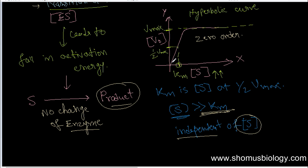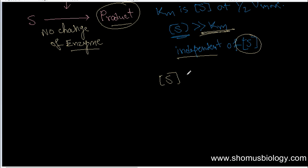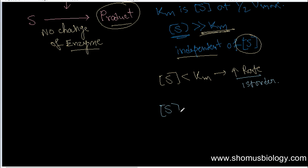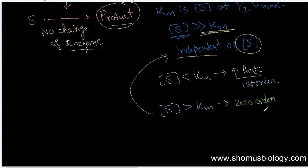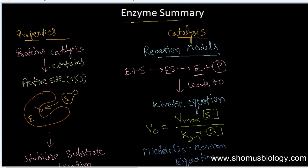This region where velocity is at maximum is zero order kinetics. When the velocity was rising — that is, when the substrate concentration is much less than Km — the reaction follows first order kinetics with a rapid rate of enzymatic reaction. But when the substrate concentration is greater than Km, the rate becomes independent of substrate concentration and the reaction follows zero order kinetics. This concludes the catalysis summary.